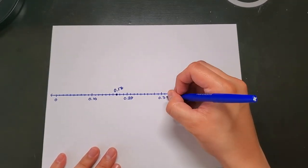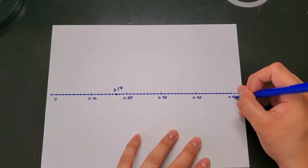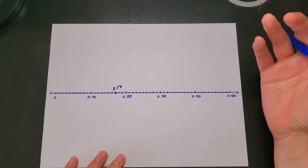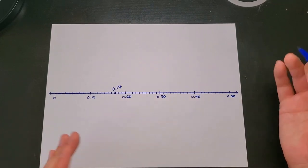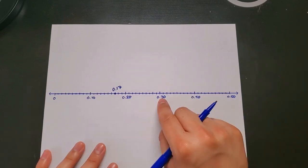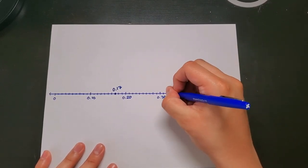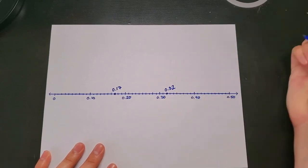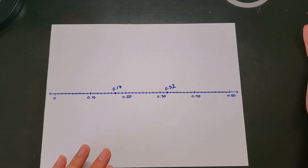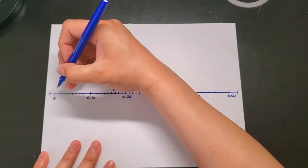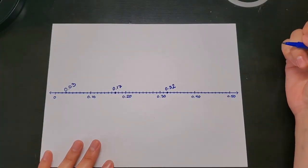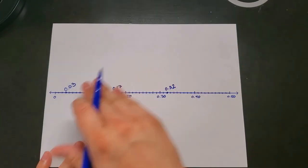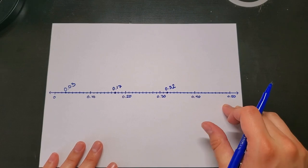To make it easier, I'll change these tenths into hundredths. Adding that zero doesn't change the number — as we said, two tenths is the same as twenty hundredths, or two dimes is the same as twenty cents. Let's find thirty-two hundredths: thirty hundredths is here, so thirty-two hundredths would be right there. For three hundredths — that's less than ten hundredths — one, two, three. And there we have three hundredths. This is how we find decimals up to hundredths on a number line.